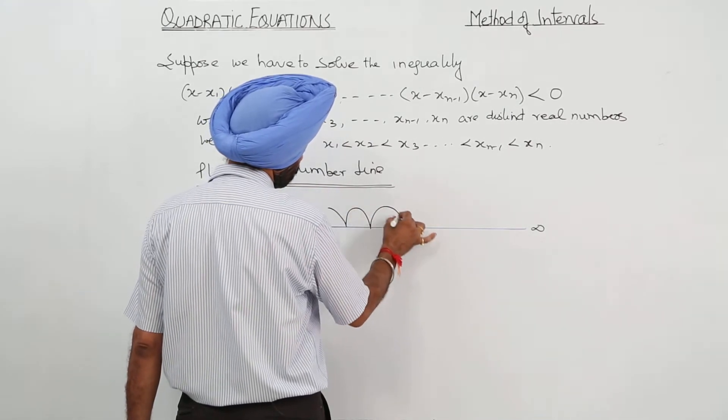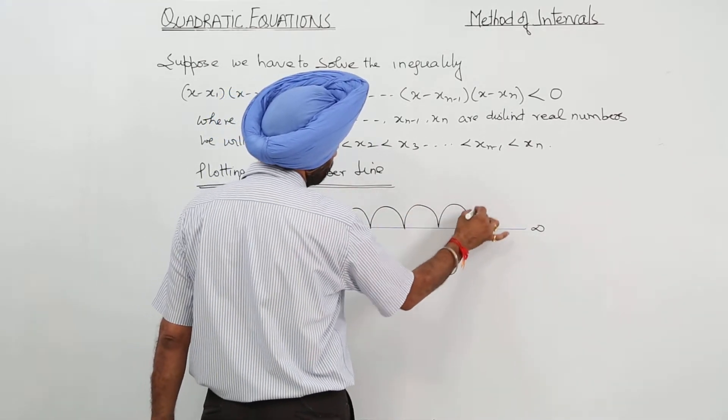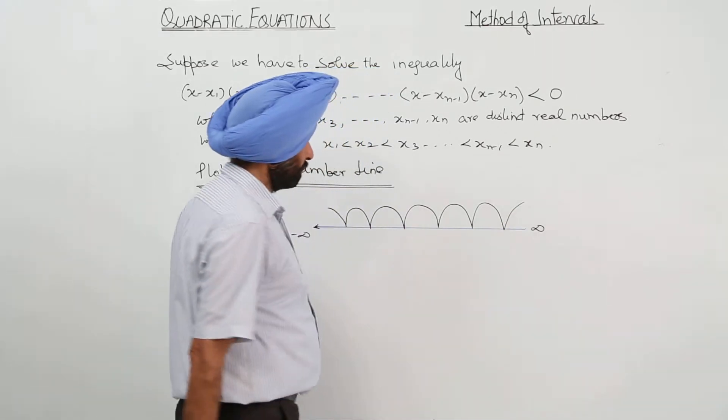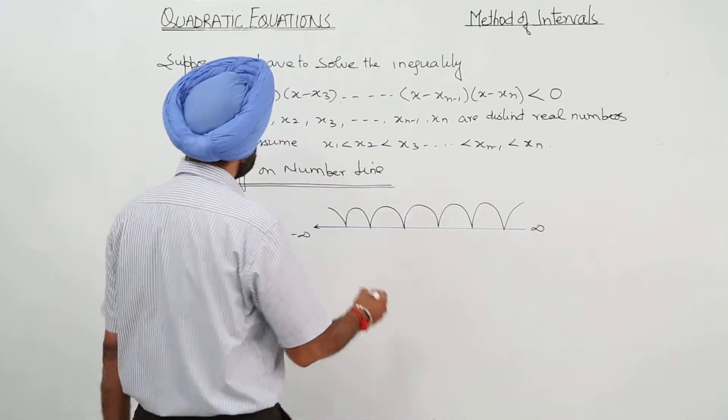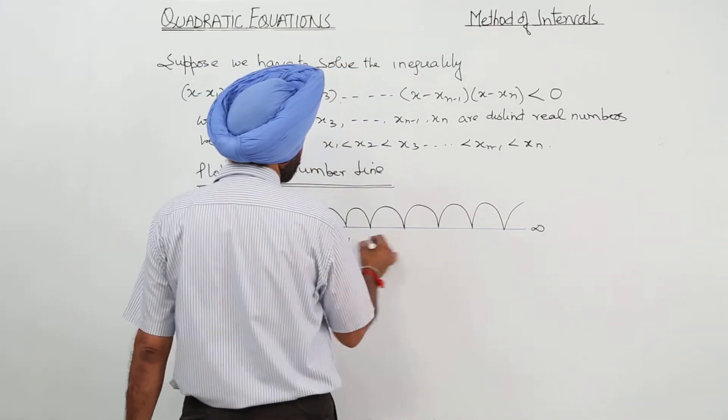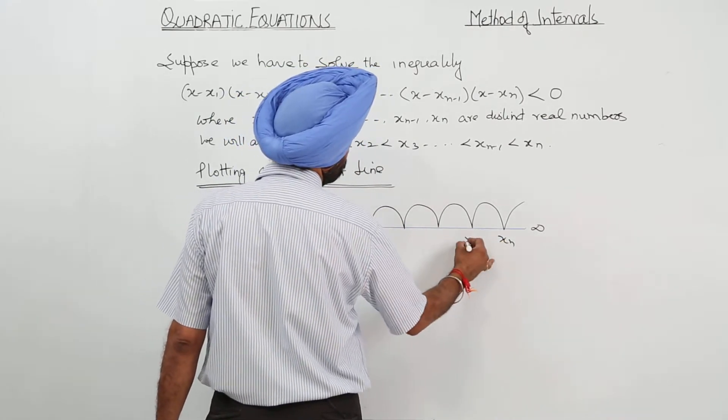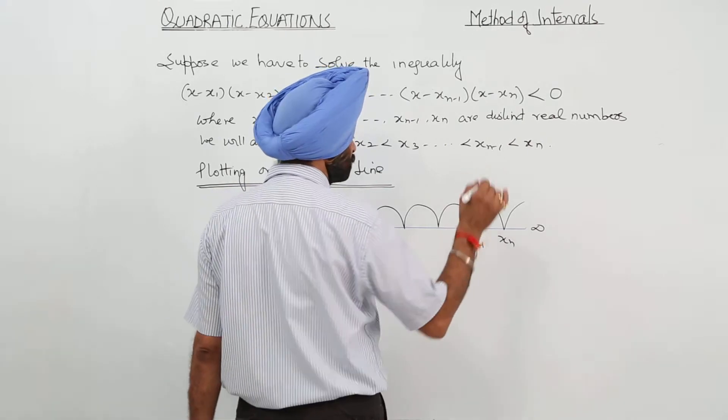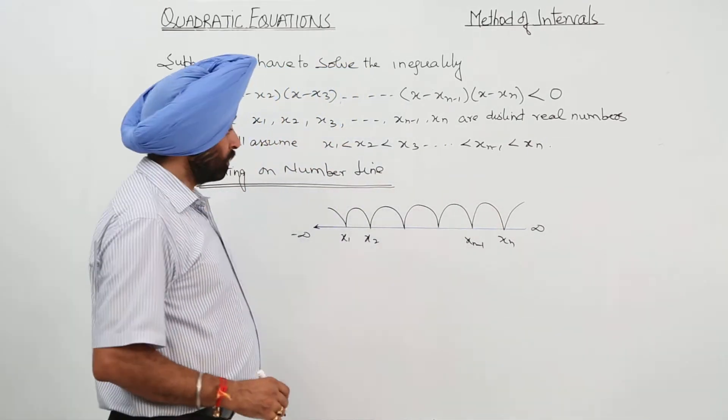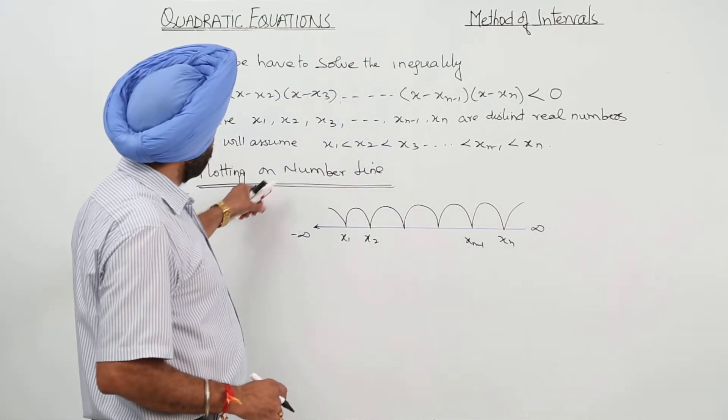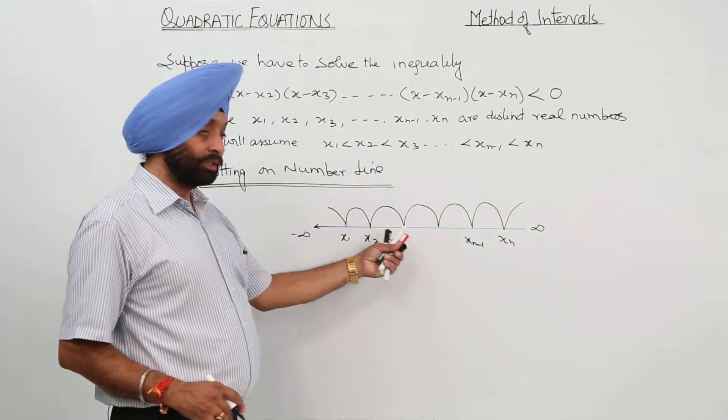We are just going to make whatever intervals we are having like this one. Just writing it: x1, xn, x2, xn minus 1 and so on. So, we are going to plot these points on a number line in this manner.